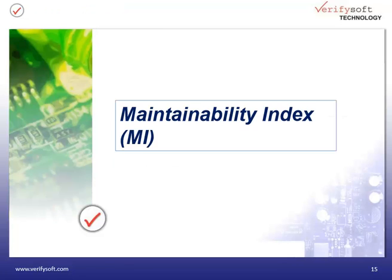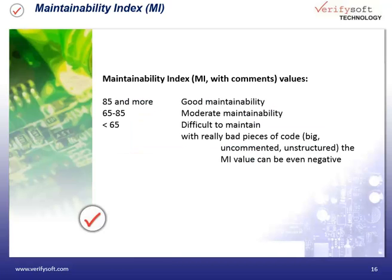The maintainability index indicates when it becomes cheaper and less risky to rewrite the code for maintaining the software instead of modifying it. A maintainability index of 85 or more indicates good maintainability. Code with a maintainability index less than 65 is difficult to maintain. It might be better to rewrite the parts of the code with that low maintainability index instead. By the way, with really bad pieces of code which are obfuscated, uncommented, or unstructured, the maintainability index can even be negative.